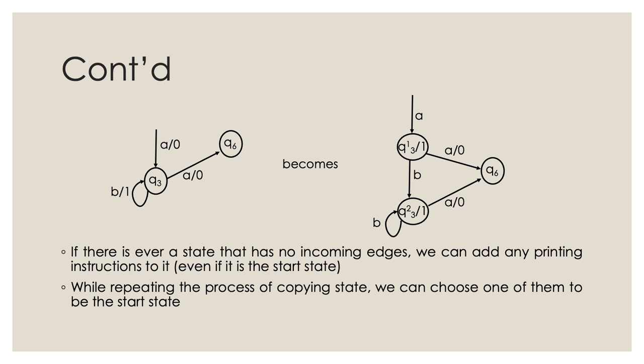If there is a state with no incoming edges, we can add any printing instructions to it. While repeating this process of copying states whenever necessary, we can choose one of them to be the start state. This makes the conversion non-unique, and that is okay — since Me is equivalent to Mo without the initial start symbol being printed. The machine Mo initially prints some character specified by the start state, which does not correspond to any output from Me, as Me never prints before reading any input character.